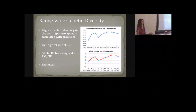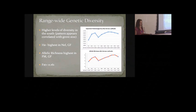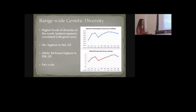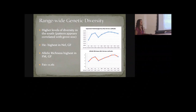Looking at range-wide patterns, we found generally higher genetic diversity in the south versus the north, and a lot of this appears correlated with grove size. However, there are standouts — allelic richness, a measure of genetic diversity, was highest in Freeman Grove, which is much smaller than Giant Forest. We're doing more sampling in the south to understand these dynamics better. We also measured FST, which indicates how much of total variation is among populations versus within — telling us that a significant amount of diversity in giant sequoia is among populations, so where you sample matters.